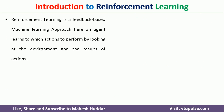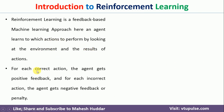Reinforcement learning is a feedback-based machine learning approach. In this case, the agent will look into the environment. Based on the environment situation, he will perform some actions. For each action, he will be given a feedback in the form of rewards. For example, if he has performed a correct action, he will be given a positive feedback. If he has performed a negative action, he will be given a negative feedback, also called a penalty.